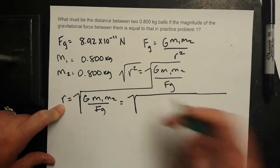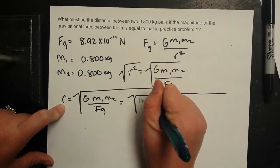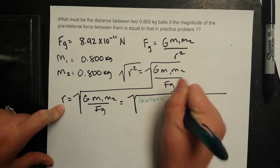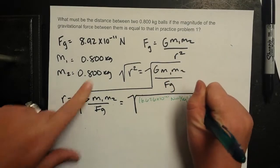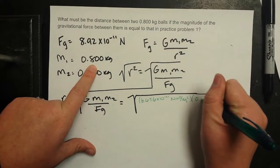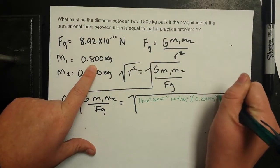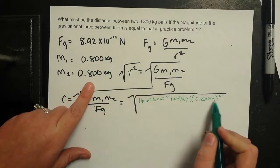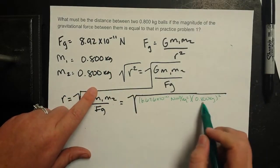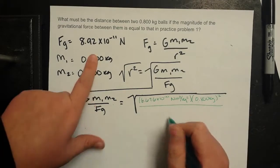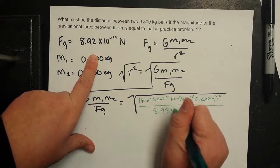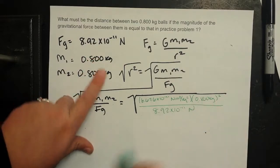I'm going to write that out. 6.676 times 10 to the negative 11th newton meters squared per kilogram squared times 0.8 kg squared. I'm going to write it like this because it's 0.8 kg times 0.8 kg, all divided by 8.92 times 10 to the negative 11th newtons.